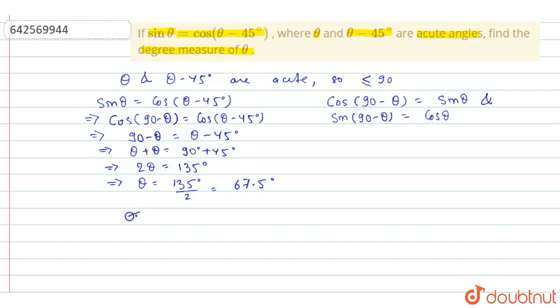We may write our final answer, the degree measure of theta is equal to 67.5 degree. I hope you have understood the explanation. Thank you.